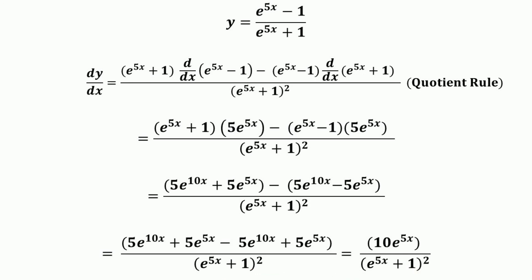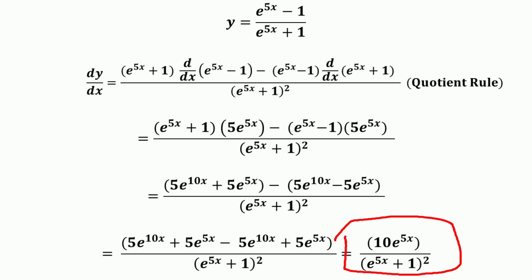Thus, for the given function (e raised to the power 5x − 1) divided by (e raised to the power 5x + 1), applying the quotient rule and the exponential differentiation rule, the derivative equals 10e raised to the power 5x divided by e raised to the power 5x + 1, squared.